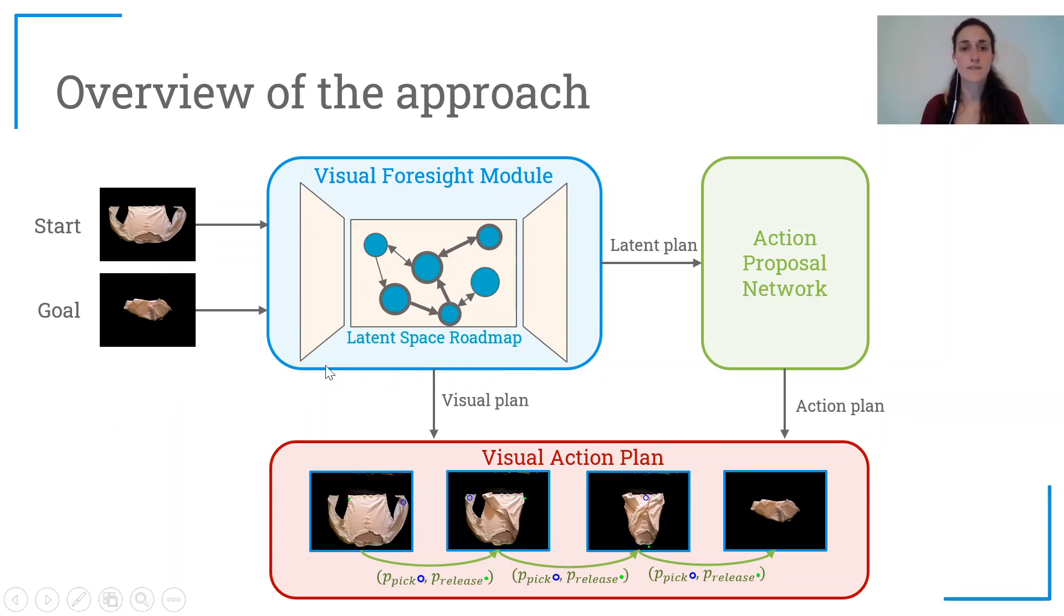The main component is the visual foresight module that gets the start and goal configurations and produces the visual plan, that is the sequence of images from the start to the goal.